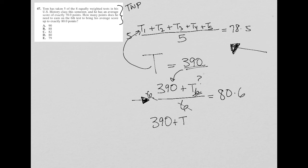I'll leave it T6. It's bothering me, but you could use whatever variable that you like. So 390 plus T6 or test six is equal to 80 times six, which is 480.